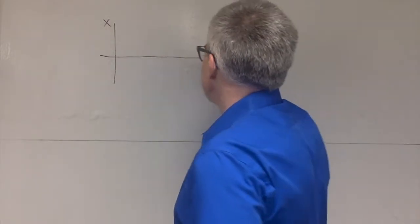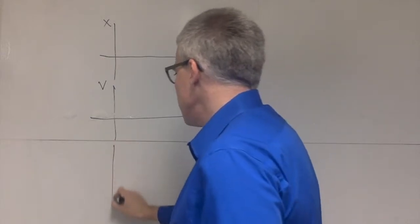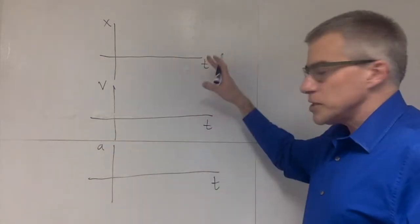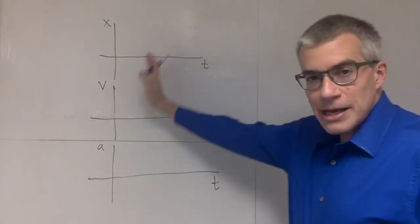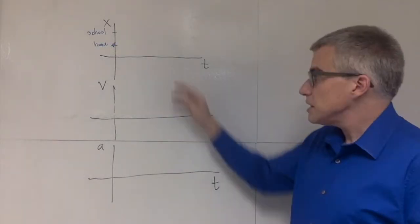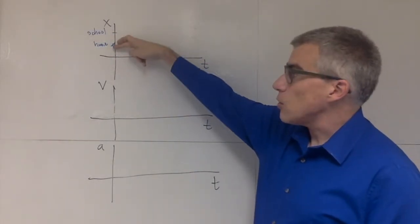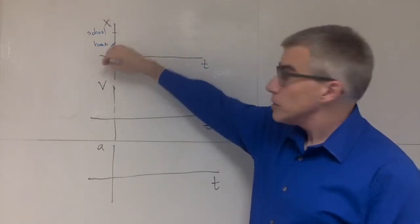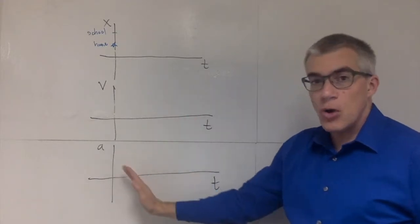Imagine graphing x versus t and under it v versus t and under it a versus t. We're going to do this in a number of scenarios. The time axes are synced up. That's why I put one directly above the other. As time passes, we're going to move to the right on all the graphs.